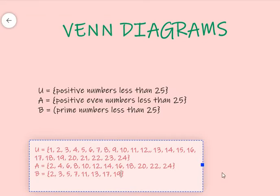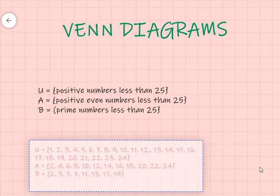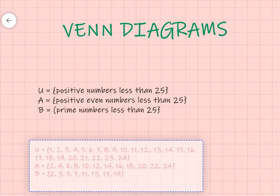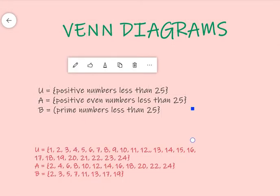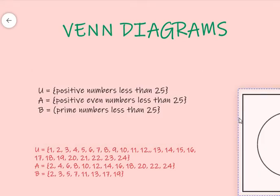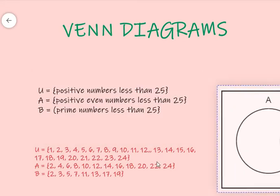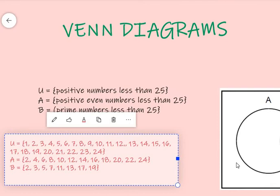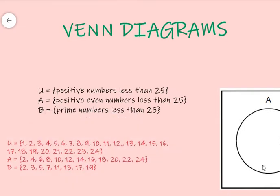Now that we can identify all the elements in each set, we can go ahead and draw our Venn diagram. Let's just know if it is that we have an intersection. Do we have two numbers that are common to both sets A and B? Yes, we do. So, that means that we're going to draw a Venn diagram where the sets or the circles overlap.